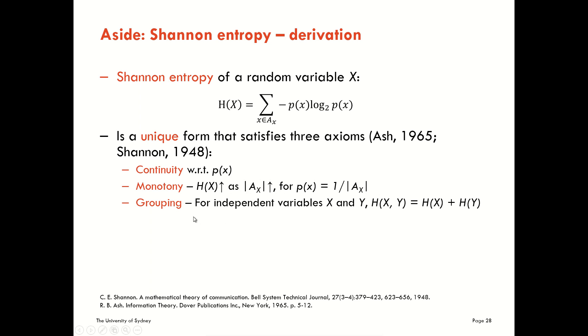Okay, and the last axiom is what's known as grouping, which means that for independent variables, we require that the entropy or the average uncertainty is equal to the sum of uncertainties across those variables. Let me emphasize again that's just for independent variables. That makes sense, right? If our variables are independent, then the total uncertainty should be a sum of each of them because learning about one doesn't tell us anything about the other one.